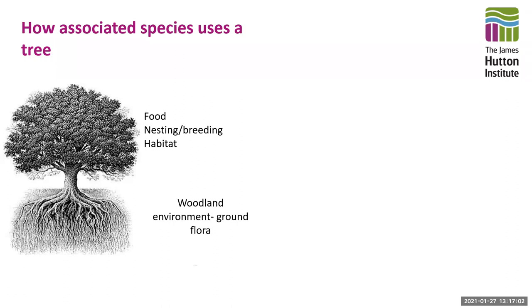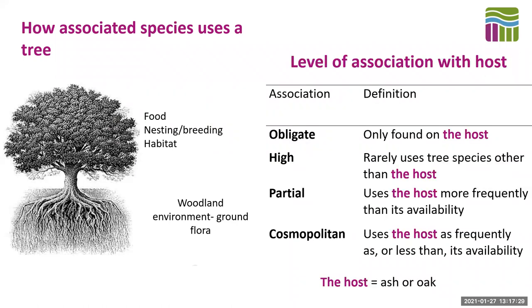In addition, a tree will also influence the environment around it through shading, light and moisture, and through those factors it will then influence other woodland species indirectly. I'll briefly mention these impacts, but when I'm referring to an associated species, it's those species that directly use the tree for food, nesting and habitat that I'm referring to. It's not just how a species uses a tree that's important, but how tightly that association is. An obligate species is one that, to the best of our knowledge, is only found on that particular host tree. A highly associated species largely uses that host but will occasionally be found on other host trees.